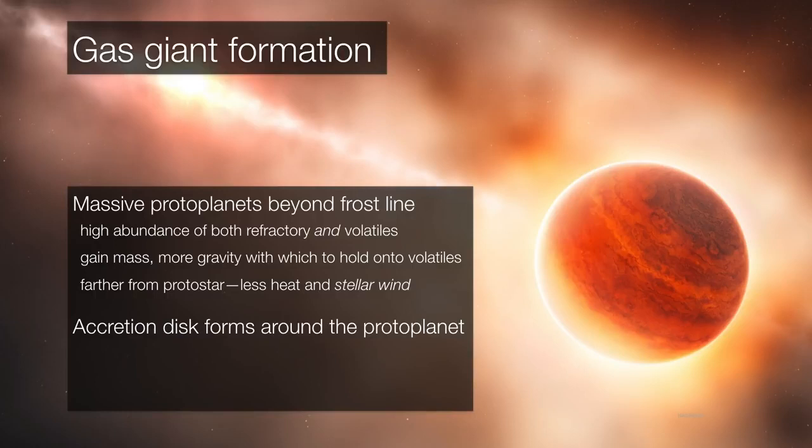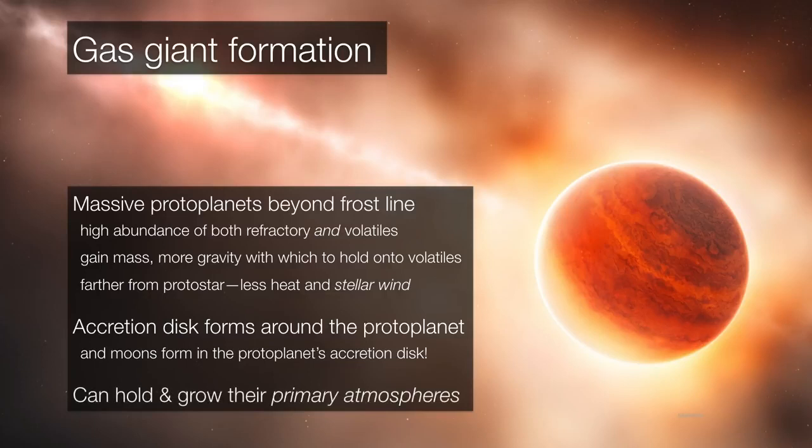So an accretion disk forms around the proto-planet. It's like a disk within a disk. And even moons can evolve from inside the proto-planet's own accretion disk. And this allows these massive outer solar system proto-planets to grow what are called their primary atmospheres. And that means that the atmospheres of Jupiter and Saturn, for example, are the same atmospheres that they pretty much formed with.